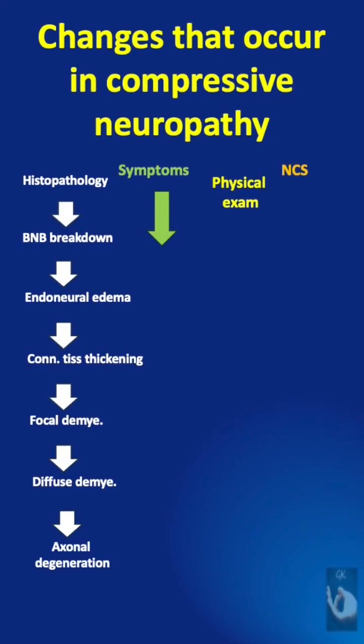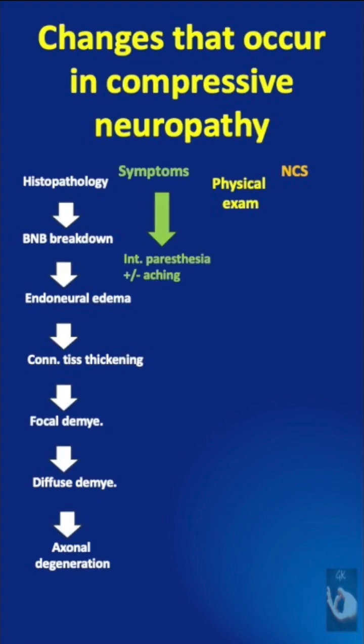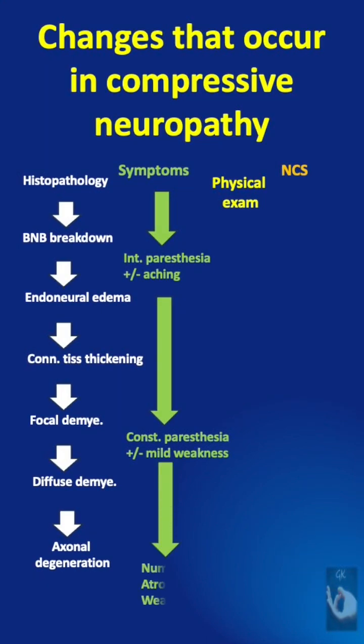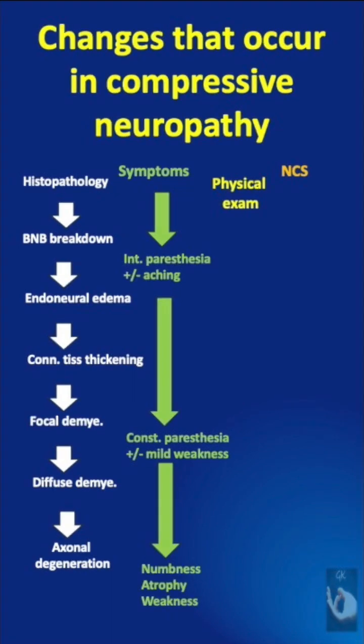At the same time, the symptoms that the patient presents with are intermittent paresthesia with or without aching, then continuous paresthesia with or without mild weakness, and finally numbness, atrophy, and weakness of muscles.